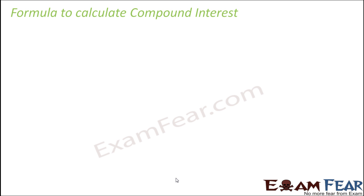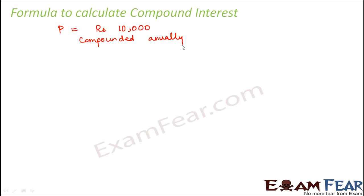So let us try to deduce a formula to very easily calculate compound interest. Let us say that you have a principal of rupees 10,000, which has been compounded annually. Compounded annually means the rate of interest is charged every year on a per annum basis. The rate of interest is given as 10% per annum. Our aim is to find out a formula to calculate compound interest.